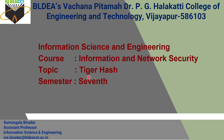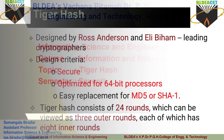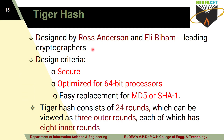Tiger Hash is one of the hash functions used to generate a hash key. It is designed by two cryptographers, Ross Anderson and Ali Biham. The design criteria for Tiger Hash is to provide high security, be optimized for 64-bit processors, and serve as an easy replacement for traditional hash functions like MD5 (Message Digest 5) or SHA-1 (Secure Hash Algorithm 1).